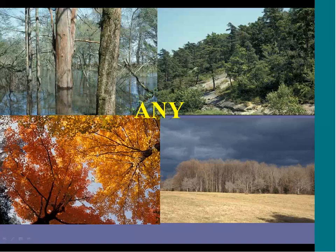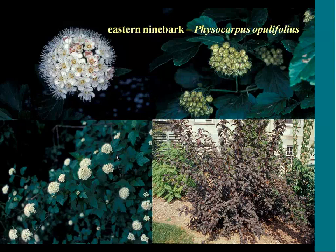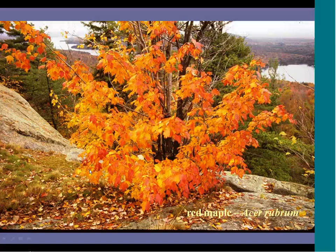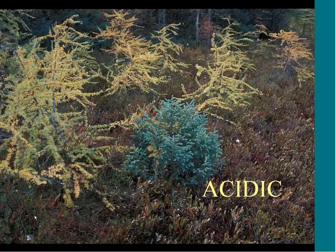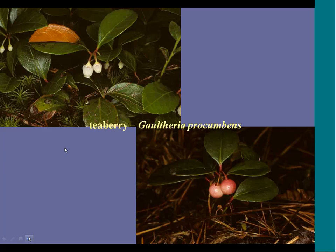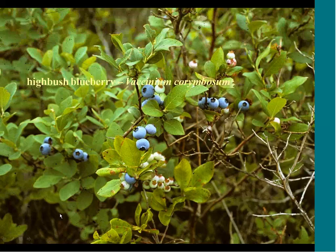For just about any kind of site condition: switchgrass, a real good native being considered for biomass production with a lot of neat horticultural varieties. Eastern ninebark has really striking horticultural varieties with different kinds of leaf colors. Red maple is found in the greatest number of forest types of any tree in the eastern United States. For really acidic sites, species from bogs work well — T-berry is now being sold even at Home Depot. The pinkster azalea and highbush blueberry are also great options. I replaced a hedge with 15 highbush blueberries — now 15 years old, just using sulfur — and I'm picking quarts and quarts of blueberries every summer.